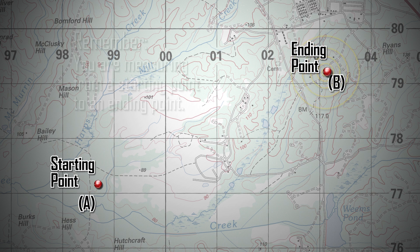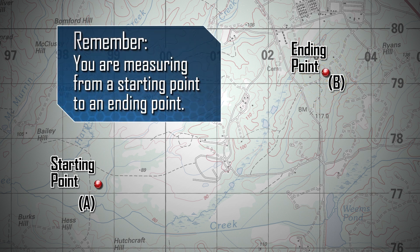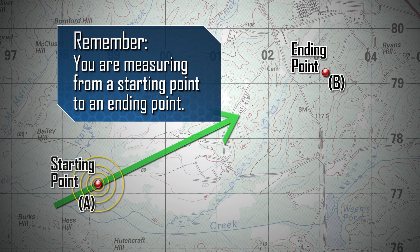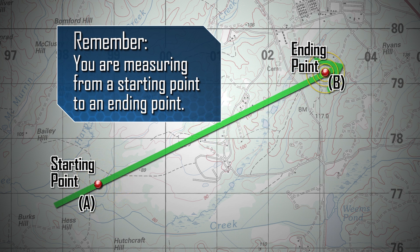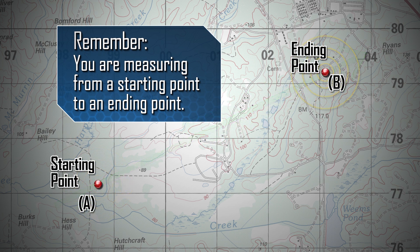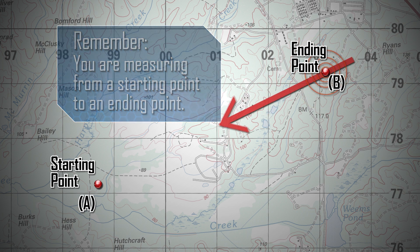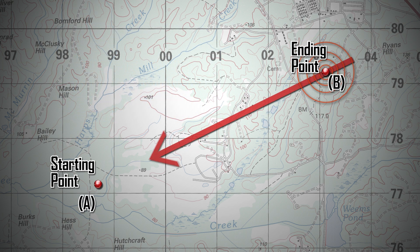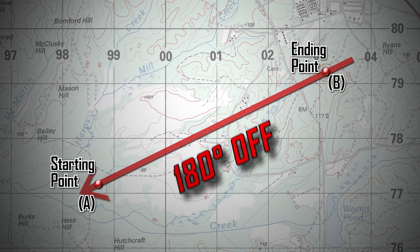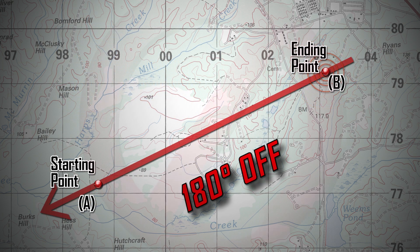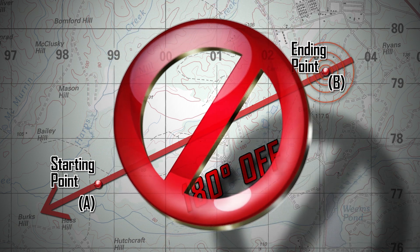Remember, when measuring azimuths on a map, you are measuring from a starting point to an ending point. If the reading is taken from the ending point first, the grid azimuth will be 180 degrees off, and you will move in the wrong direction.